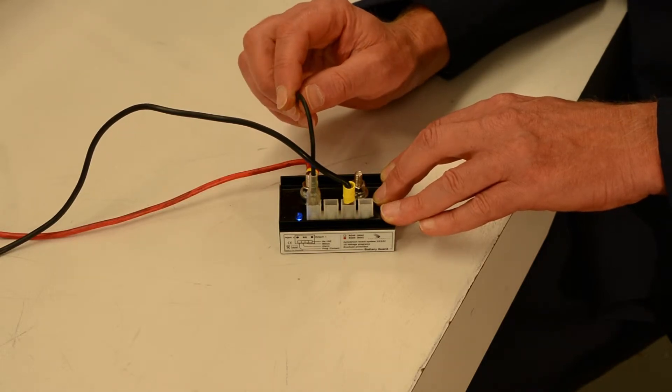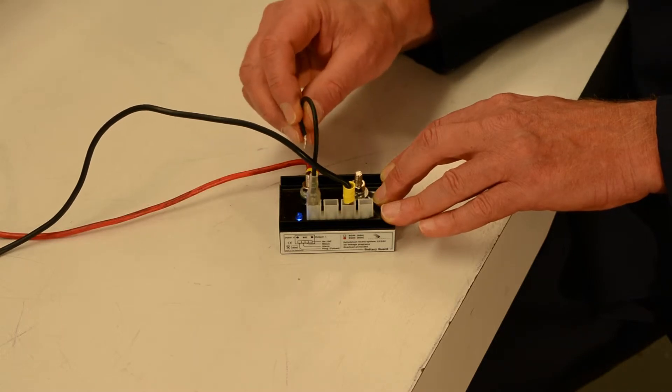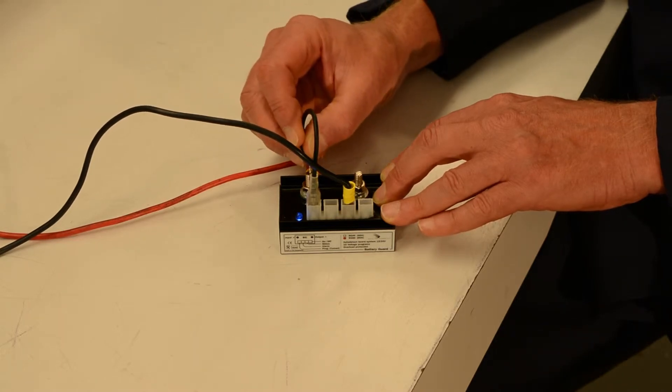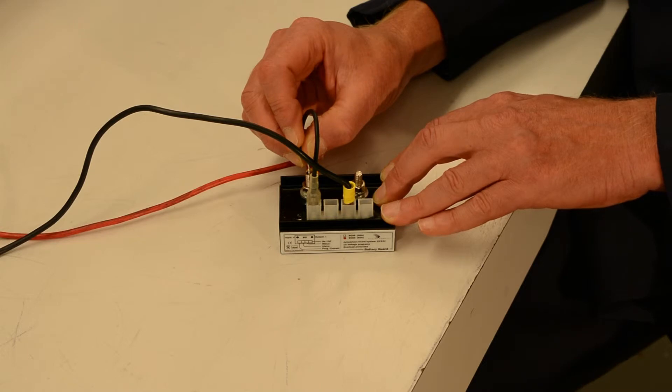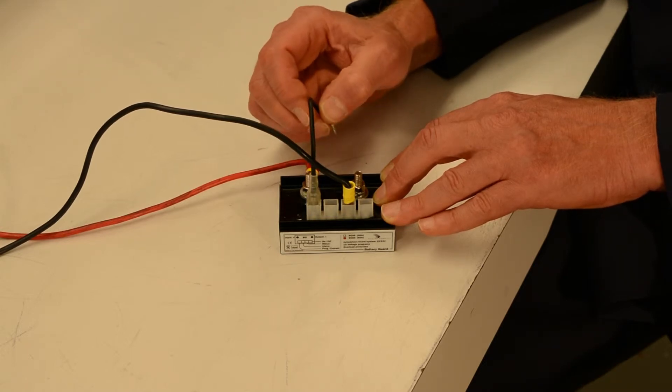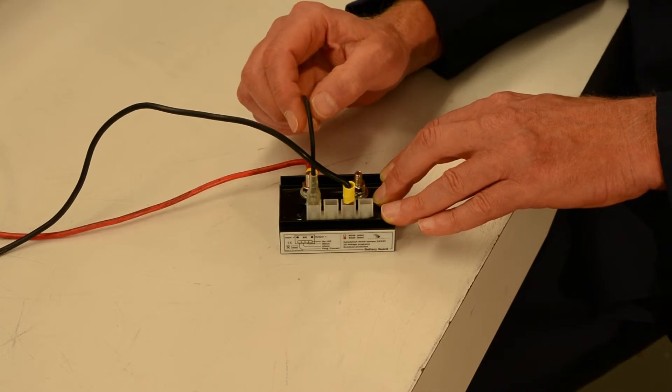If I wanted, for example, to change the voltage to another program like program three, I hold it on again. Wait one, two, and three. Remove it. It confirms it. One, two, three. And I've set it for program three.